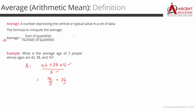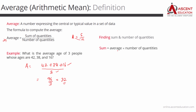In formula form, we write it as A = S/N, where A is average, S is sum, and N is number. Sum equals average into number. And number of quantities equals sum divided by average. Those are three variants of writing the same formula.